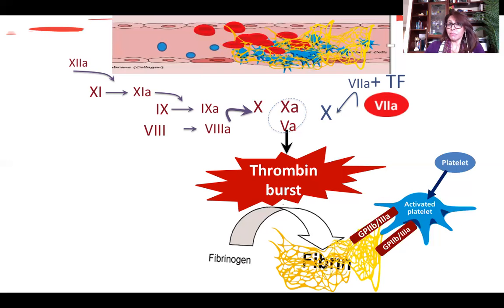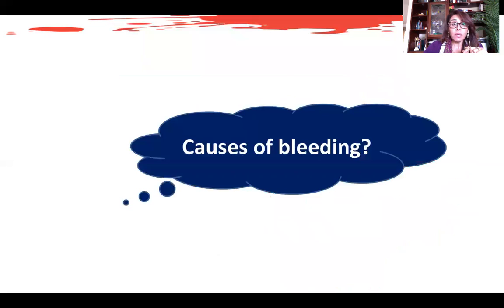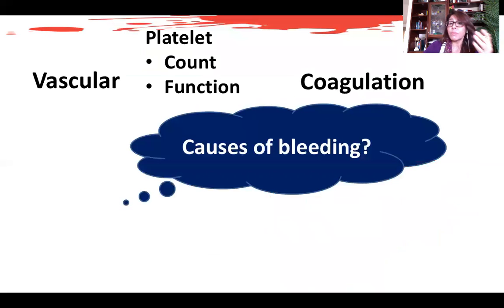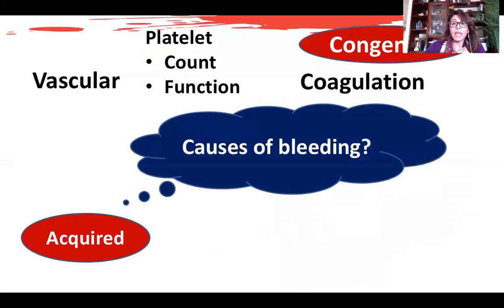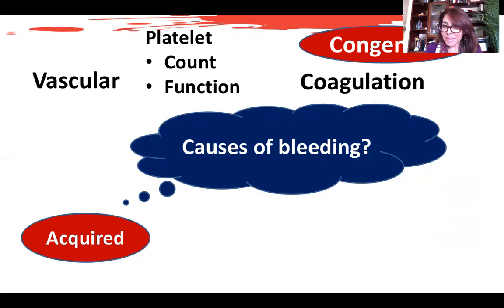From this mechanism, it's easy to understand the causes of a bleeding disorder. The generalized causes are vascular problems, platelet problems (either count or function), and problems with coagulation factors. All these causes may be either congenital or acquired.